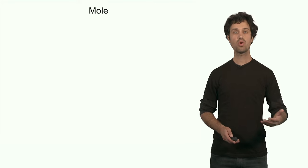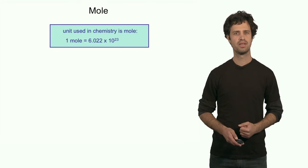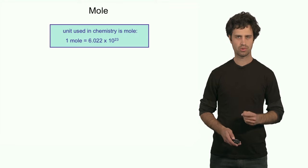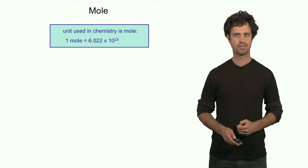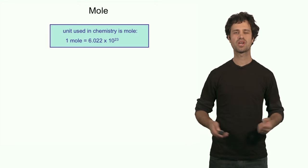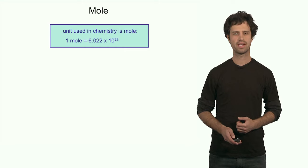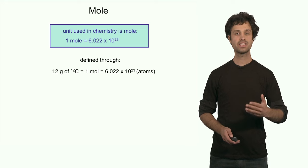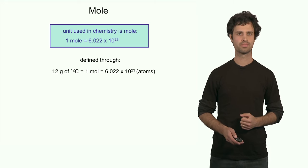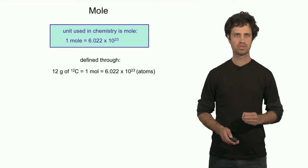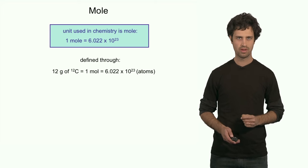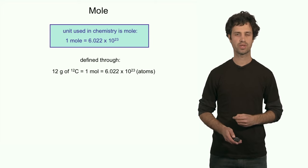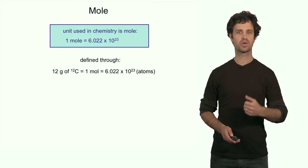What is the mole? Well, the mole is a number — it is a very, very large number. One mole is defined as 6.022 times 10 to the 23rd. Where does this number come from? It is defined as follows: 12 grams of carbon-12 is defined as one mole. Now, 12 grams of carbon-12 turns out to contain 6.022 times 10 to the 23rd atoms — that is where this number comes from.